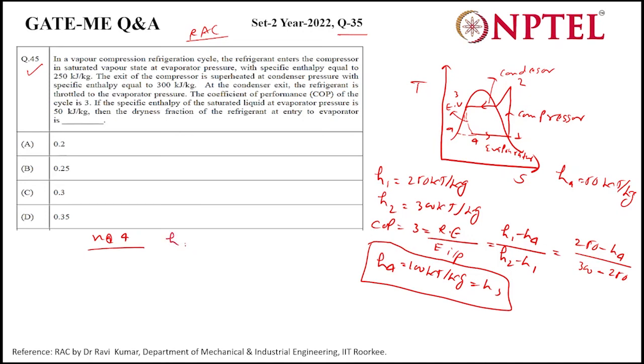Here we know h4 is equal to ha plus x times (h1 minus ha). We know the values of all and we have to find x only. h4 is 100, ha is 50, h1 is 250, and ha is 50. On solving, x becomes 0.25.